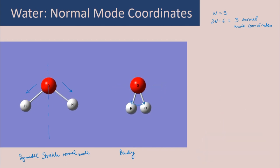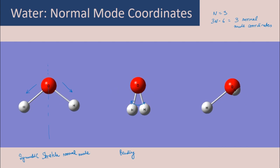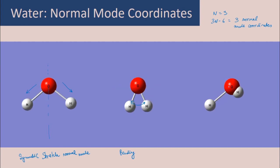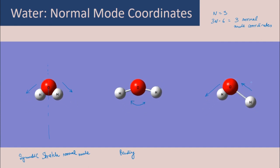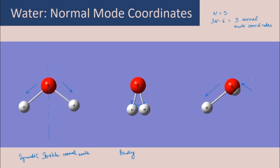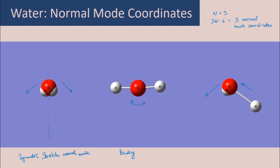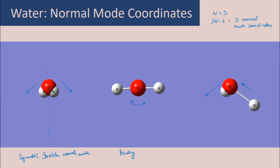The third normal mode of water can be classified as primarily a stretch, but here one OH bond is increasing while the other is decreasing, and the oxygen moves to conserve the center of mass. This motion does not conserve the symmetry of the water molecule — it is a stretching motion that breaks the symmetry. Therefore, this is called the asymmetric stretch normal mode of water.